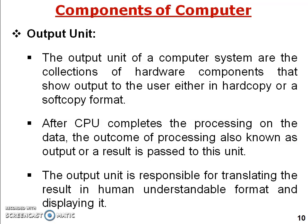The output unit of a computer system is the collection of hardware components that show output to the user either in hard copy or soft copy form. After the CPU completes processing, the outcome — also known as output or result — is passed to the output unit. The output unit is responsible for translating the results into a human-understandable format. Whatever data comes from the CPU in machine language is translated into a user-readable form that the user can see and understand.